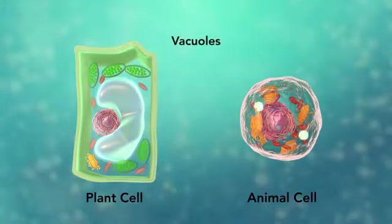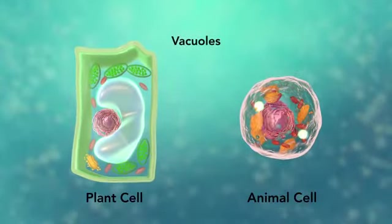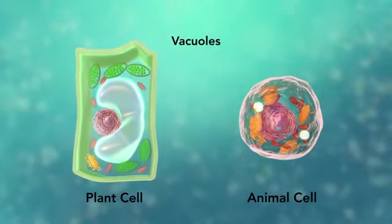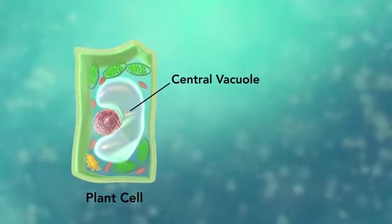Vacuoles are sac-like structures that store different materials. Here, in this plant cell, the central vacuole stores water.